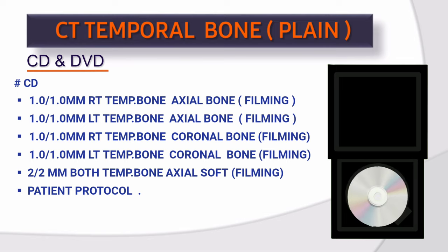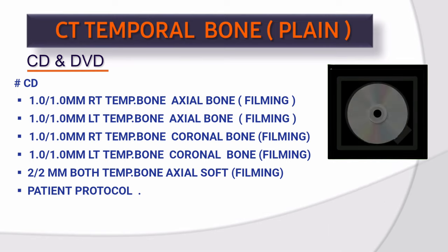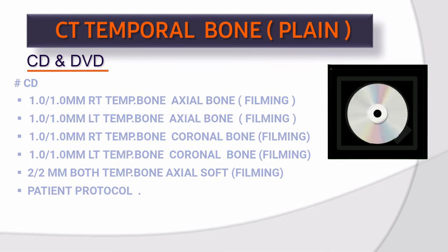Data for CD: You can give thick data — 1×1 mm right temporal bone axial bone for filming; 1×1 mm left temporal bone axial bone for filming; 1×1 mm right temporal bone coronal bone for filming; 1×1 mm left temporal bone coronal bone for filming; 2×2 mm both temporal bone axial soft for filming; and patient protocol.